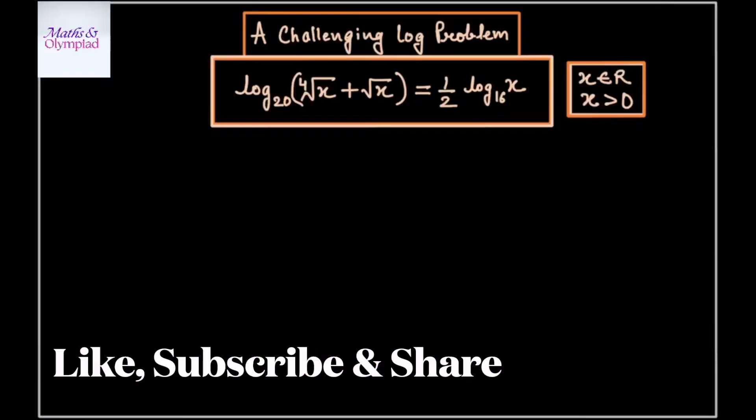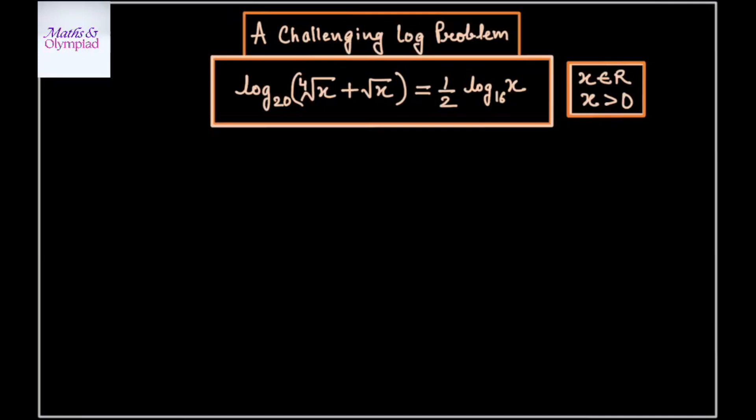Welcome back to my channel, Maths and Olympiad. In this video, I will be taking a challenging log question which says: log of the 4th root of x plus square root of x, to base 20, equals 1 over 2 times log x to base 16. Since x belongs to the real numbers, the value of x must be greater than 0.